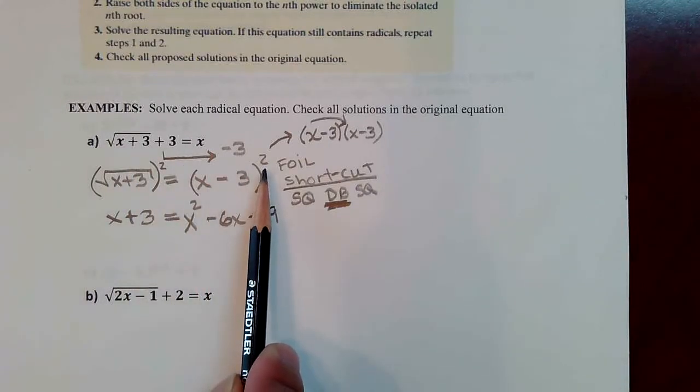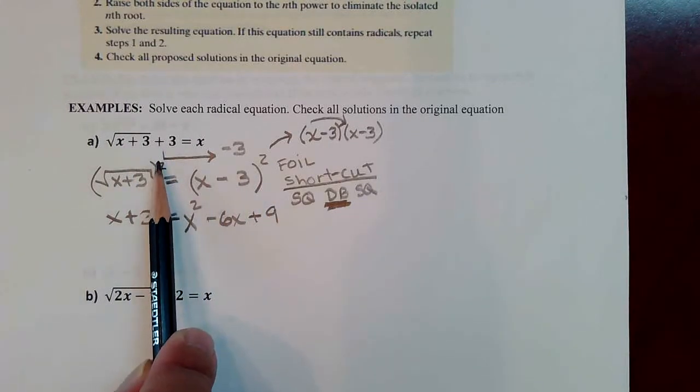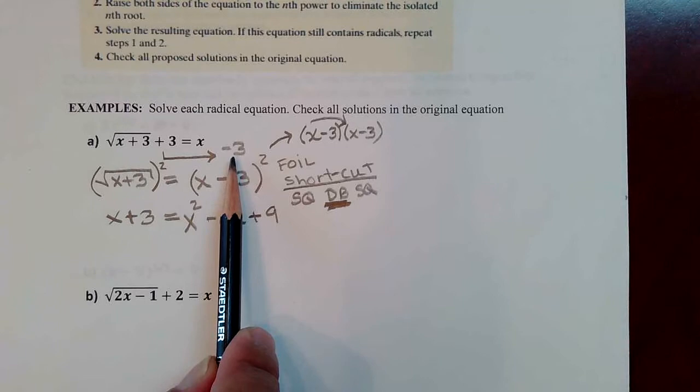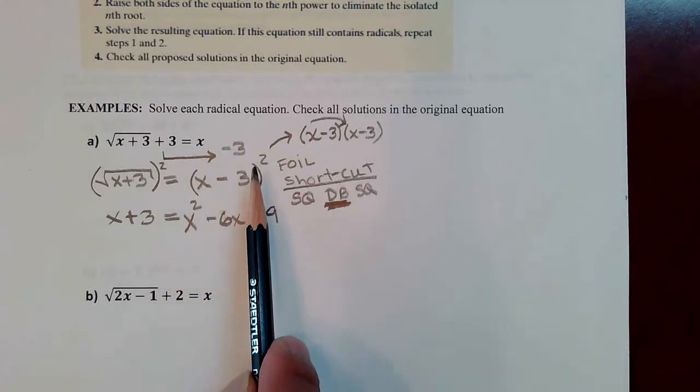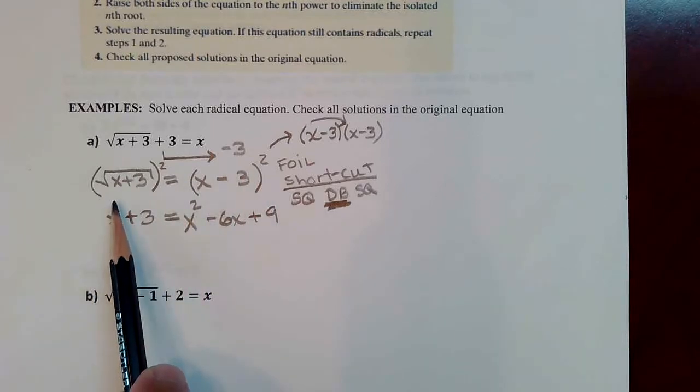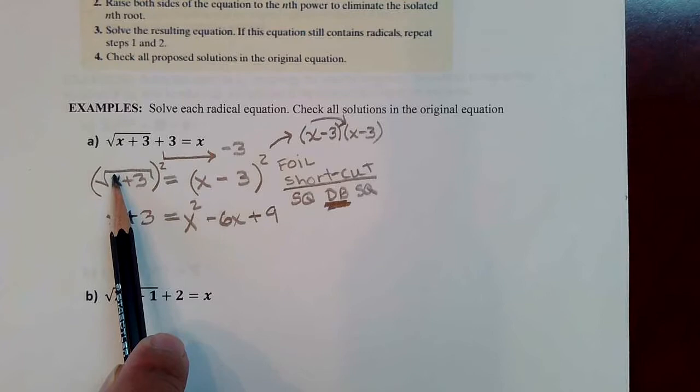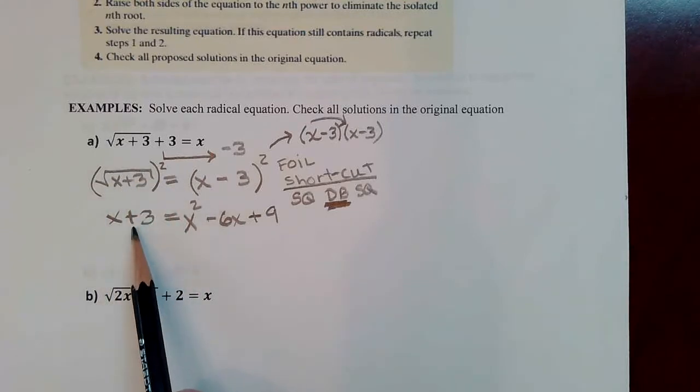We had put a square on each of these expressions because when you bring the 3 over to the other side, you then have x minus 3. So that entire expression needed to be squared as well as the radical. On the radical side, it's easy to just square it and the square root comes off and out comes the radicand.